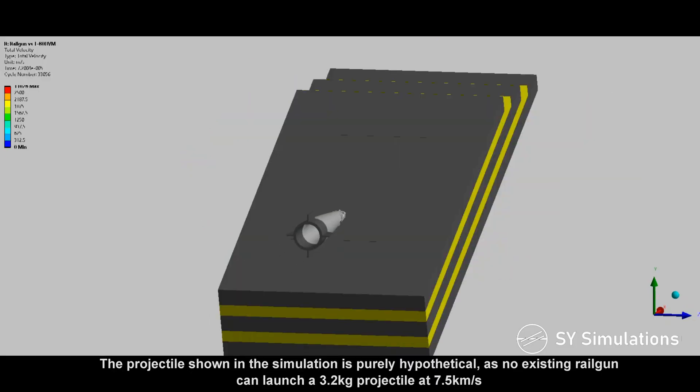The projectile shown in the simulation is purely hypothetical, as no existing railgun can launch a 3.2 kg projectile at 7.5 km per second.